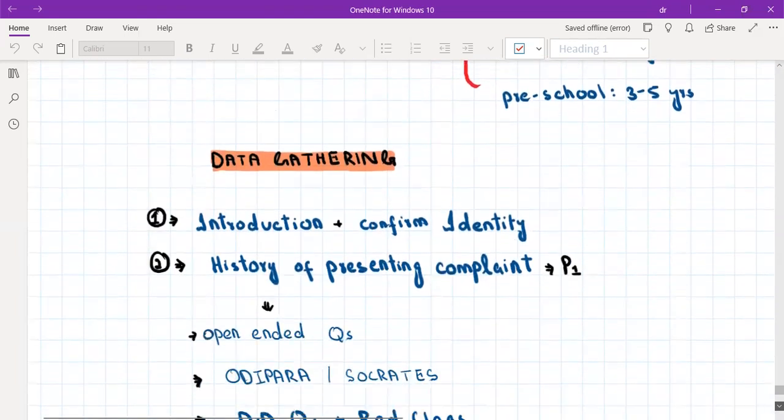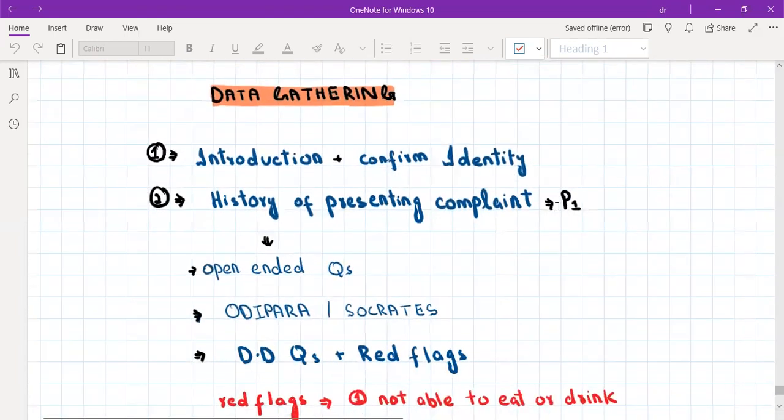So the first step in data gathering, or history taking is introduction. It's like all other stations, you will introduce yourself and then you will confirm identity. So if you are talking to the parent, then you will confirm the parent identity. So we'll ask their name, and then you will ask their relationship with the child. And then you will ask the child's full name and his age. Okay. So this is basically confirmation of identity.